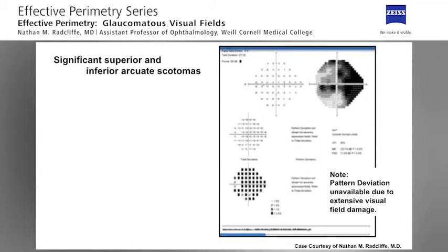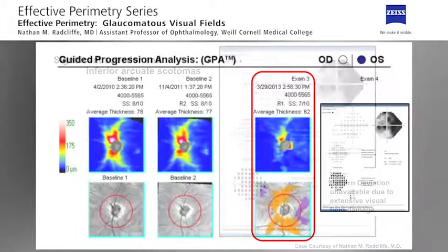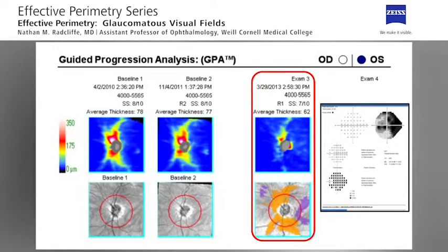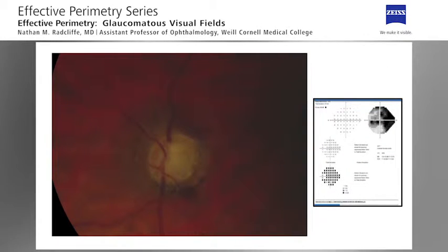As discussed earlier, generalized depression typically occurs from cataract and not glaucoma. In this example, however, we see a generalized depression to the visual field which is the result of significant superior and inferior arcuate scotomas, with approximately 20 decibels of visual field loss. An examination of the Cirrus OCT with guided progression analysis demonstrates that this patient has progressed significantly from baseline and that there is significant retinal nerve fiber layer loss superiorly and inferiorly. The optic nerve photograph demonstrates pallor and cupping, characteristic of glaucomatous optic neuropathy.